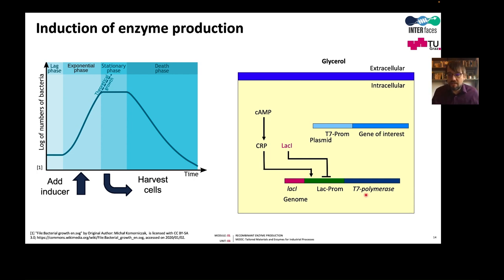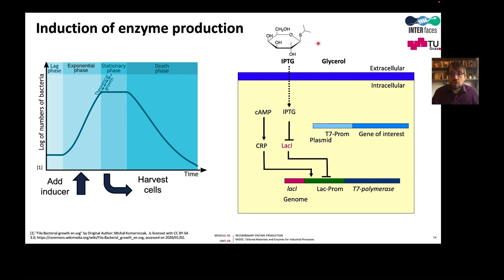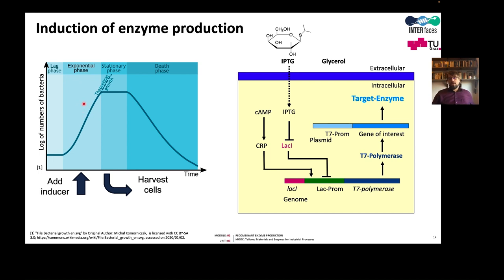The trick is that the T7 polymerase gene is put under the control of the lac promoter, which is regulated as described before. For instance, we can cultivate our cells with glycerol, and then at a certain point add IPTG. IPTG is a lactose derivative with a similar effect on the lac repressor as lactose, but it is not degraded by the cell. Cells catabolize lactose, giving variable inducer concentrations, which we don't want. IPTG is not catabolized, so the concentration stays the same. IPTG is taken up, it de-represses the lac promoter, leading to synthesis of the T7 polymerase, which then recognizes the T7 promoter and produces a large amount of our target enzyme. This is a very simple system: at a certain point in time, we can suddenly induce transcription of the gene of interest.